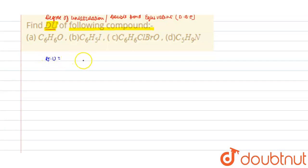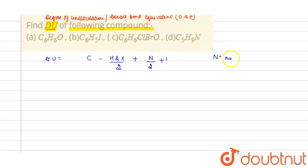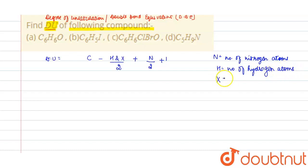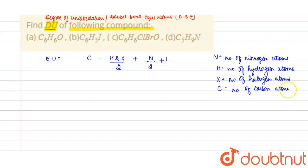The formula for degree of unsaturation can be calculated using: number of carbon atoms (C) minus number of hydrogen and halogen atoms (H + X), divided by 2, plus number of nitrogen atoms (N) divided by 2, plus 1. Here N is number of nitrogen atoms, H is number of hydrogen atoms, X is number of halogen atoms, and C is number of carbon atoms.